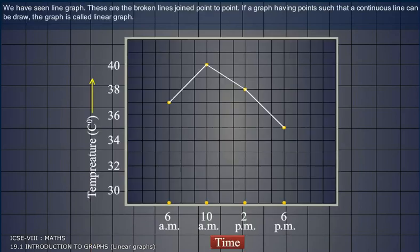Linear graph. We have seen line graphs. These are the broken lines joined point to point. If a graph has points such that a continuous line can be drawn, the graph is called a linear graph.